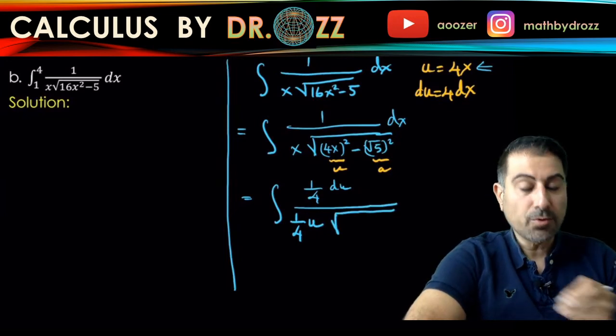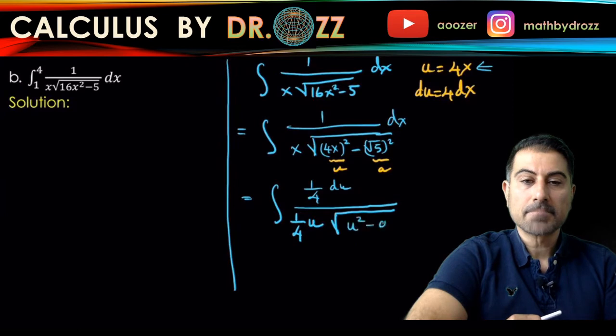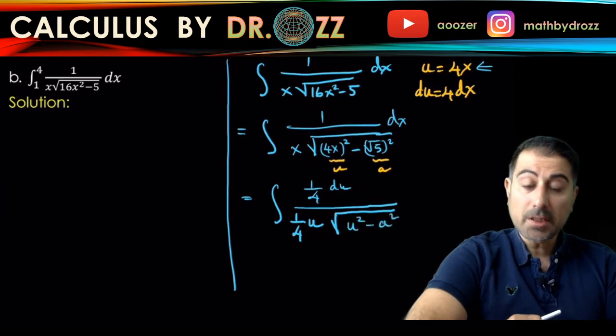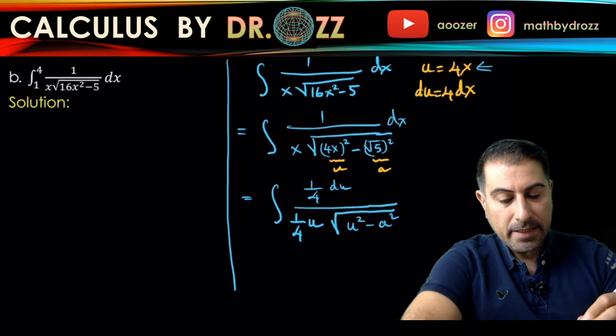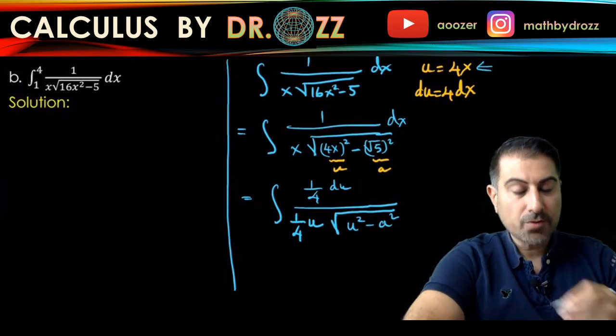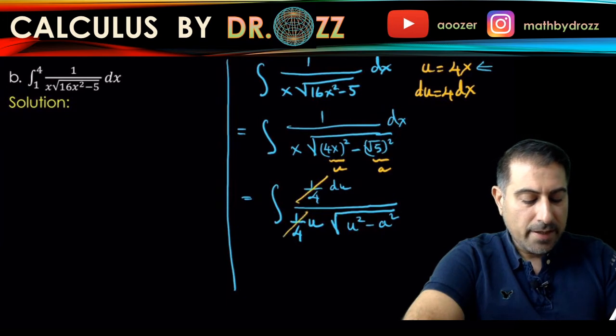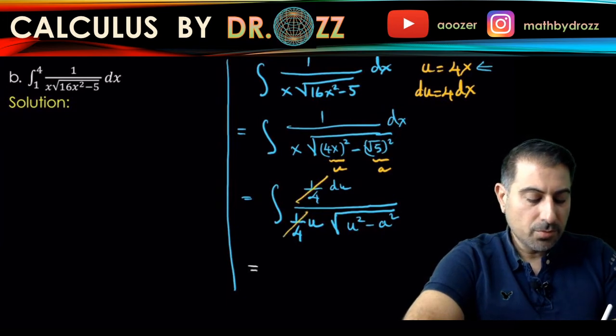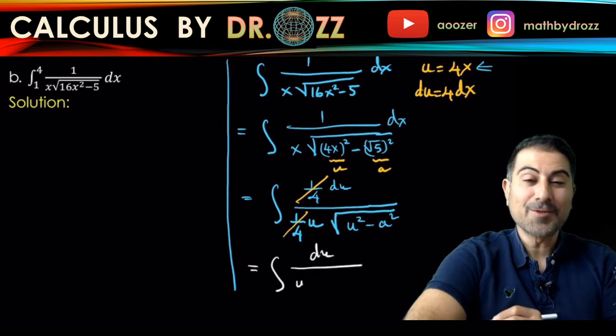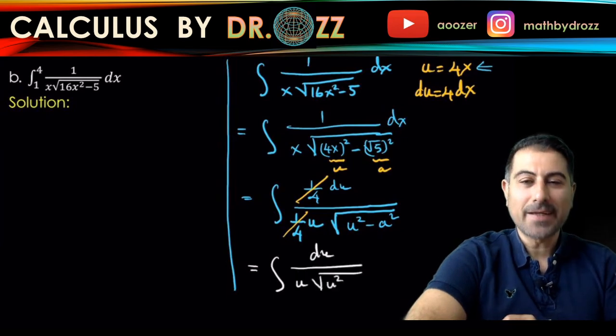Which is good because I'm going to cancel out one-fourth at the top and the bottom because they're like terms. So now I have du over u√(u² - a²). That's perfect because this is the exact same form that we had in this table here.